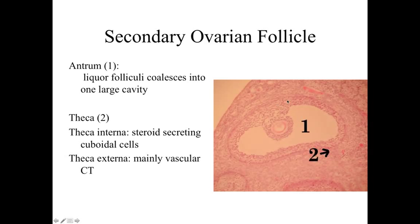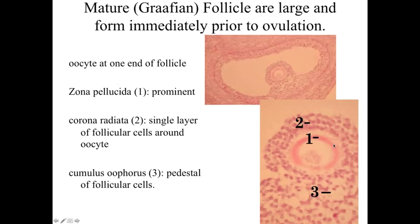In the secondary ovarian follicle, we have the oocyte with the very pink-staining zona pellucida around it and lots of follicular cells. We've got an antrum, which is the liquor folliculi coalescing into a large cavity. Then we've got the theca — the theca interna immediately underlying the follicular cells, and then the theca externa, which is mainly connective tissue cells — representing the specialization immediately surrounding the ovarian follicle.